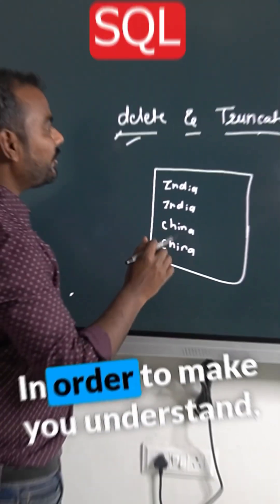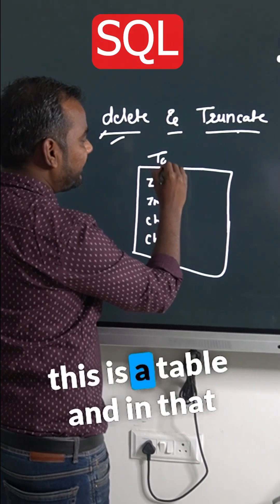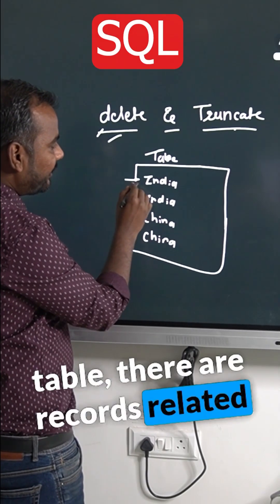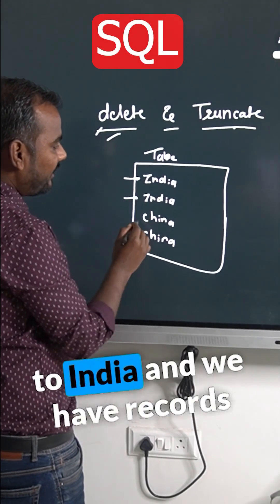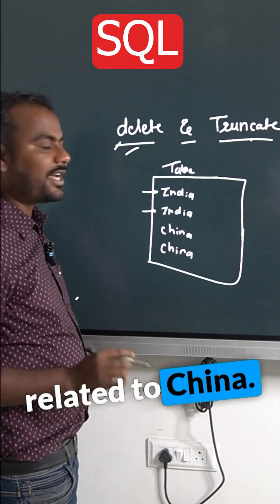In order to make you understand, first of all consider that this is a table, and in that table there are records related to India and we have records related to China.